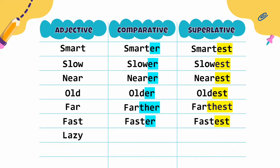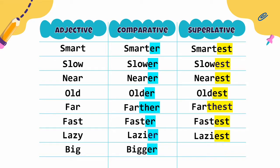Lazy — malas, lazier — lebih malas, laziest — paling malas. Big — besar, bigger — lebih besar, biggest — paling besar. Sampai sini tahu ya perbedaannya? Understand?